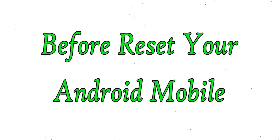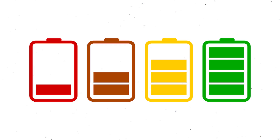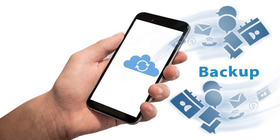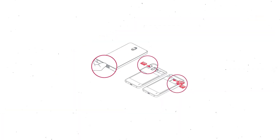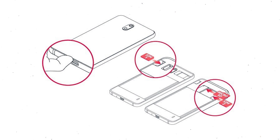Before resetting your mobile, make sure the battery is properly charged — if less than 50%, charge your mobile first. You need to make sure that the data on your device is backed up so you do not lose valuable photos or documents. Reset will delete all your mobile data, so back up all important data and remove your SIM and SD card.